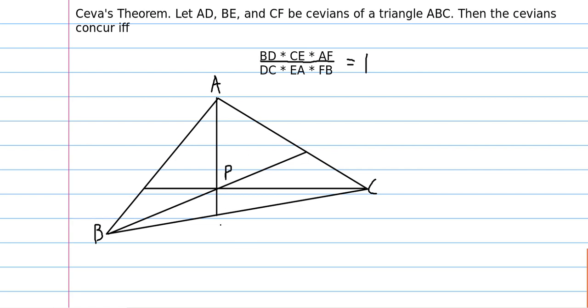A, D, B, E, and C, F are... I'm not even going to try pronouncing them, but essentially you have lines through a, b, c, and they hit the respective opposite sides at d, e, and f. Then they concur at a single point if and only if the product of these ratios equals 1.